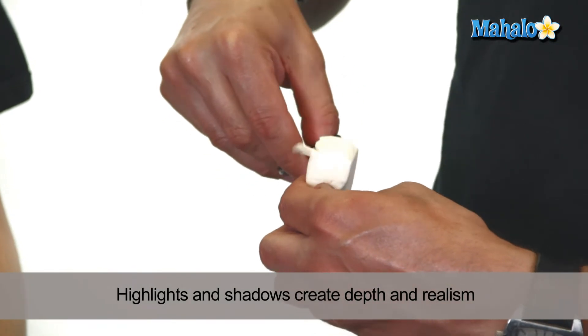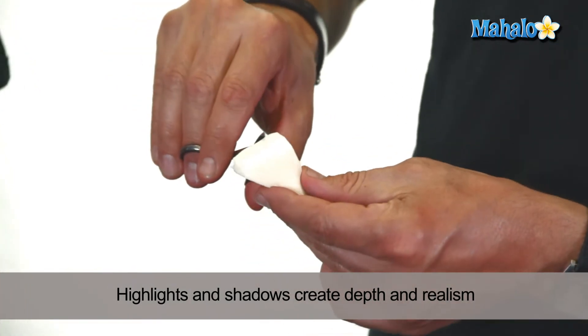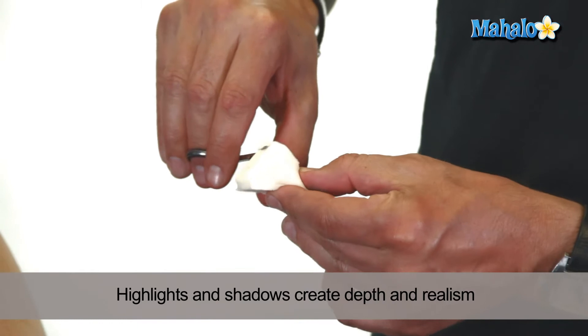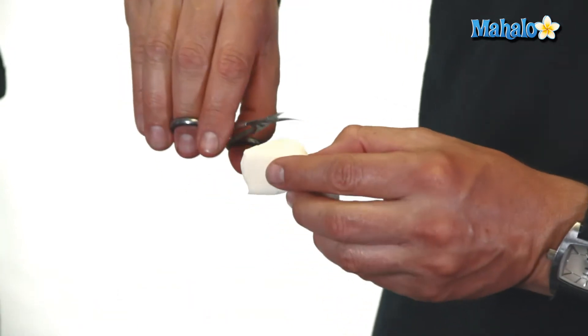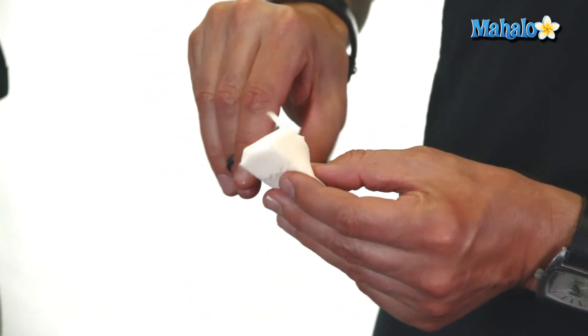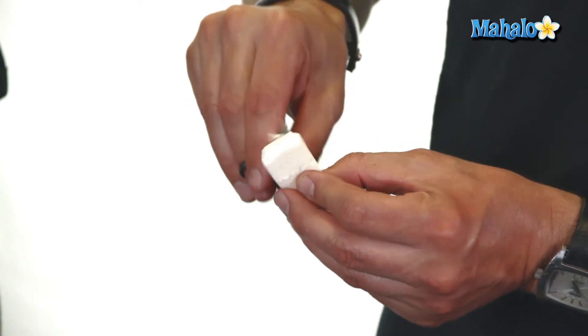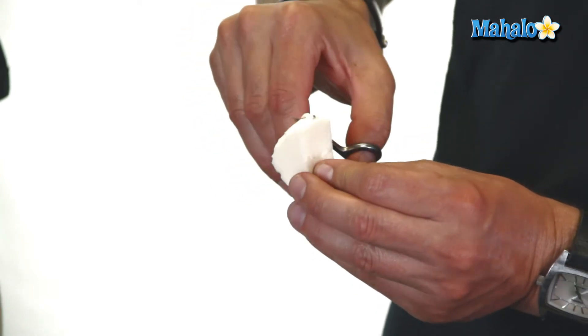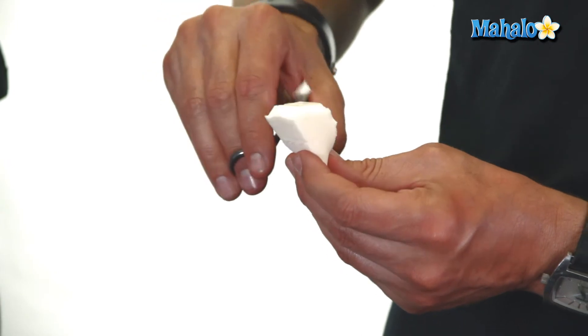You're just trimming away the 90-degree angles off the sponge, like so, creating a round edge on the sponge. This gets messy, so you're probably going to want to do this over a trash can.